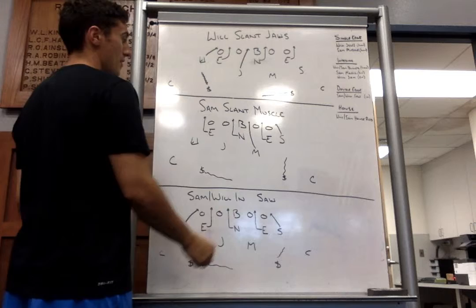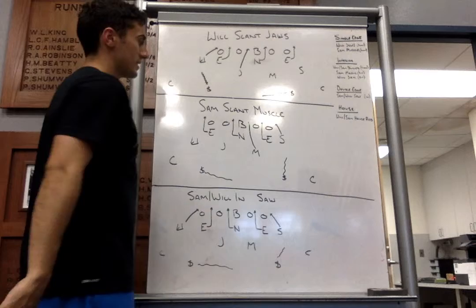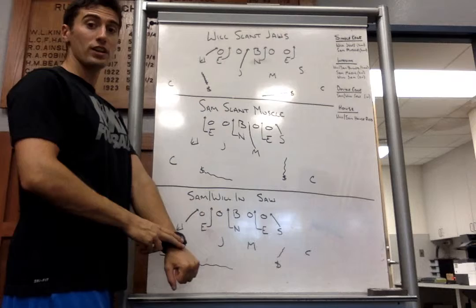Slant the line away, end in C, nose in A, end in B. Muscle, Mike and Sam. Mike will blitz A, Sam will blitz C gap. Again, we're going to roll the coverage to the Sam, play our green or our gold coverage with it.